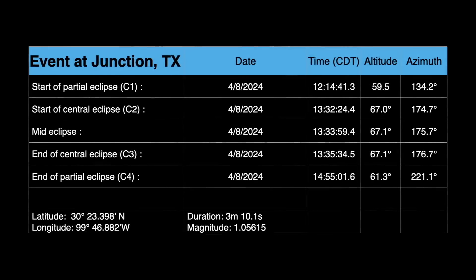Now let's look at the local circumstances for Junction, Texas. The eclipse starts here at 12:14 and ends at 2:55, central daylight time, with the mid and maximum eclipse at 1:34. The total part of the eclipse lasts for 3 minutes and 10 seconds in Junction.